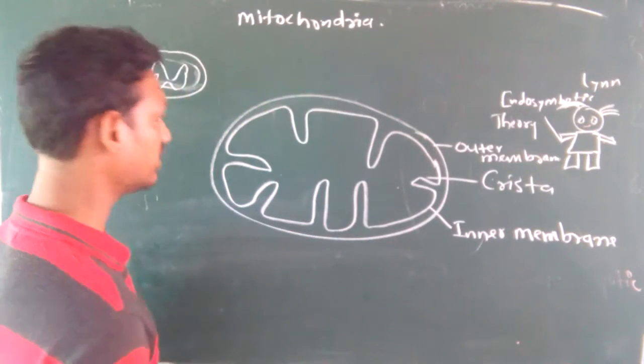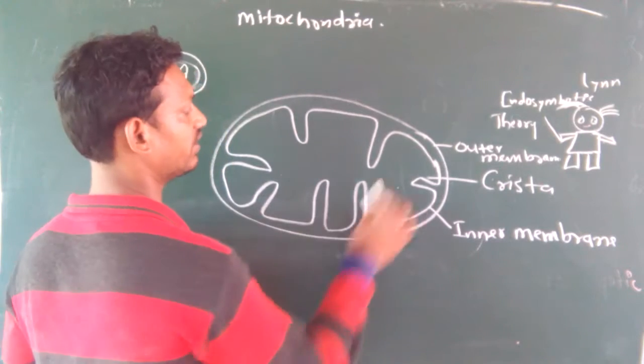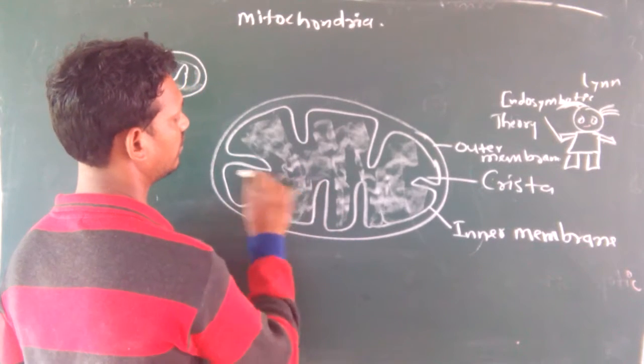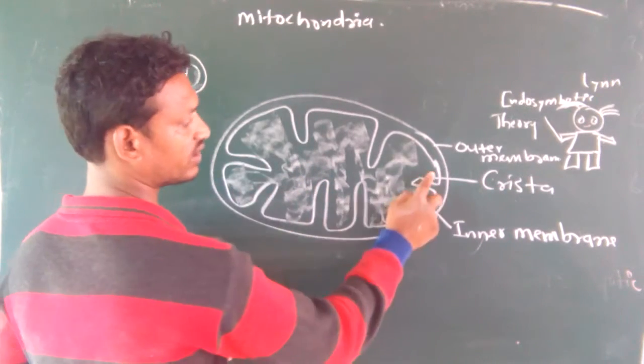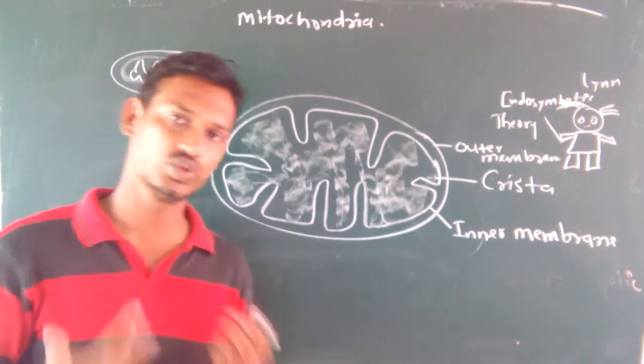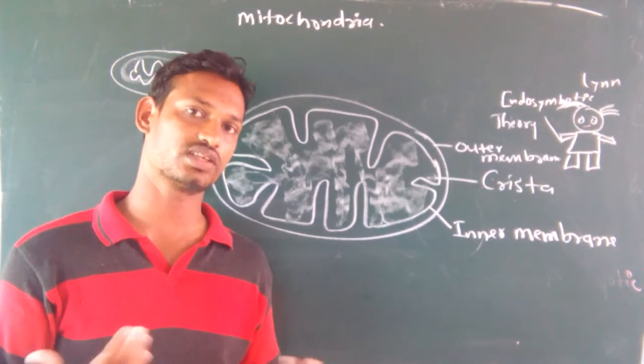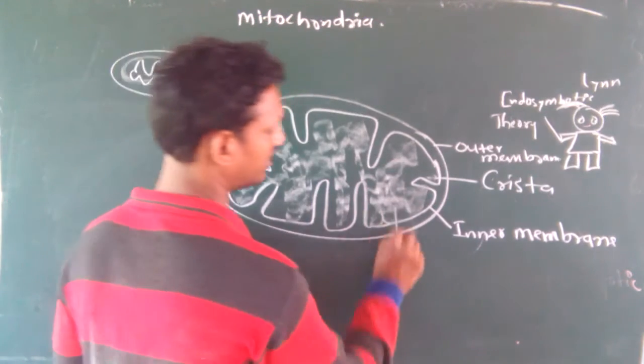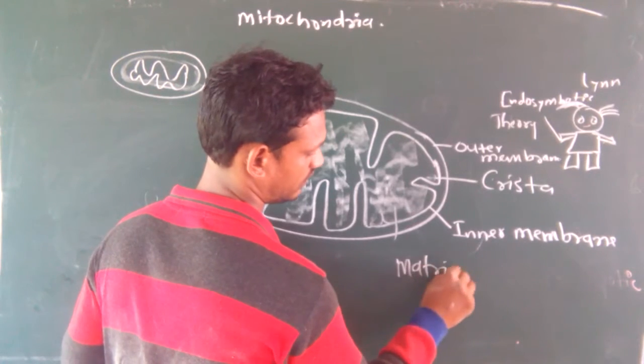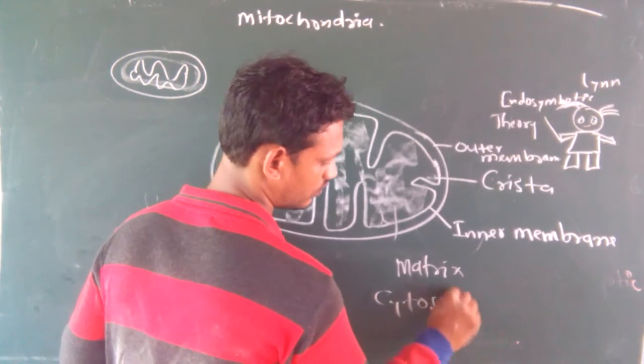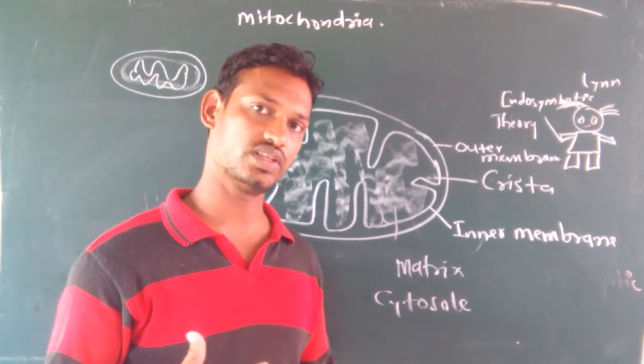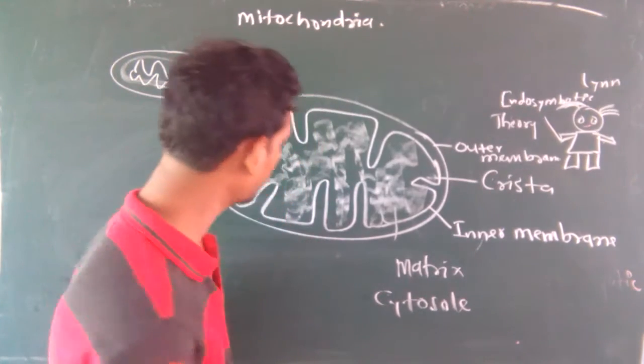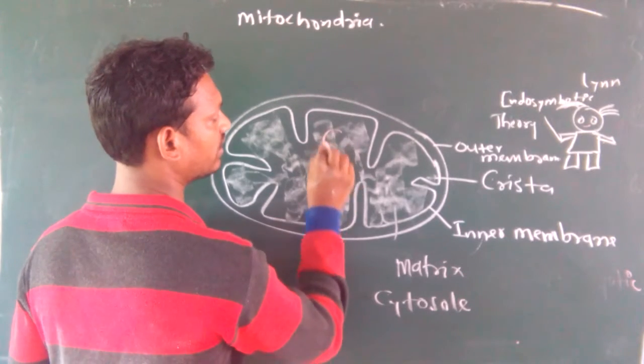The structure found inside or enclosed by the inner membrane is known as a matrix. Cristae is a structure which is produced due to the folding of membrane. Inside the cristae there is a matrix, and matrix contains cytosol. In the matrix it contains cytosol. I call it a cytosol because when there is no cell organelle being found in such condition, the liquid material is called cytosol.